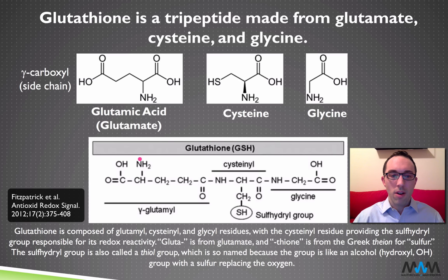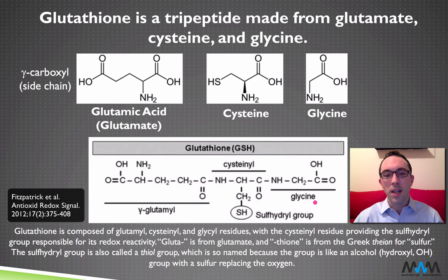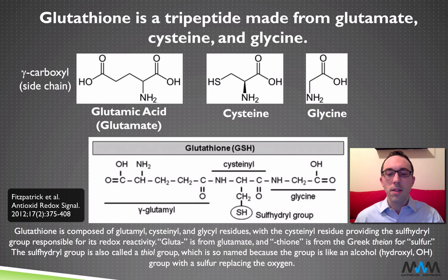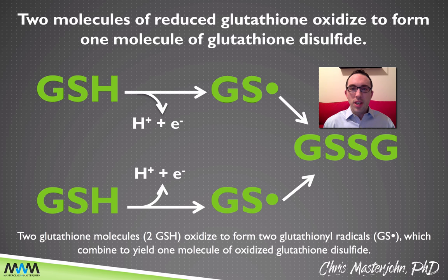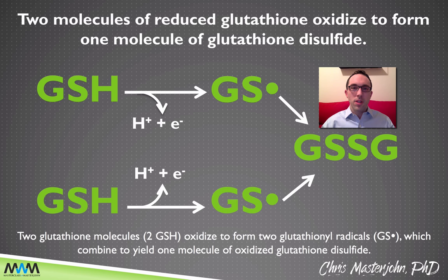When these are joined together, they are called amino acid residues, so we have a gamma glutamyl residue, a cysteine residue, and a glycyl residue, and we can call the molecule on the whole gamma glutamyl cysteine glycine. The gamma is very significant, but for reasons we're going to talk about in the next lesson. The G in GSH stands for glutathione and refers to the whole rest of the molecule besides the sulfhydryl group. The SH refers to the sulfhydryl group, also known as the thiol group.